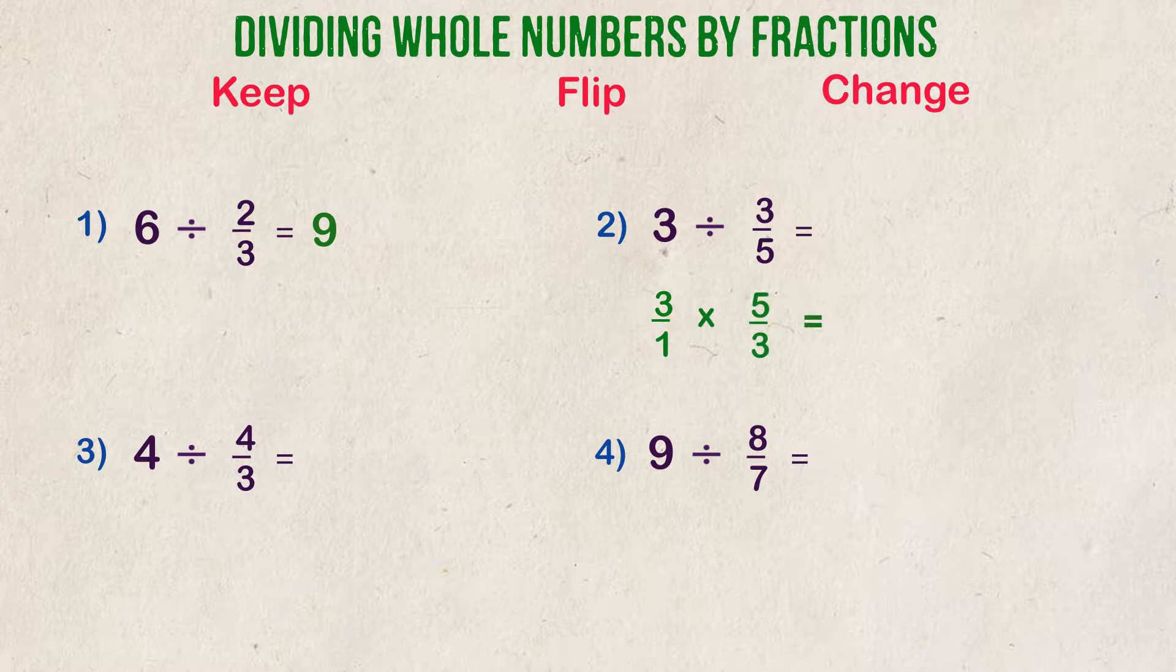3 times 5 is 15. 1 times 3 is 3. 15 over 3 is our answer, which can also be simplified down, as 3 goes into 15 a total of 5 times.